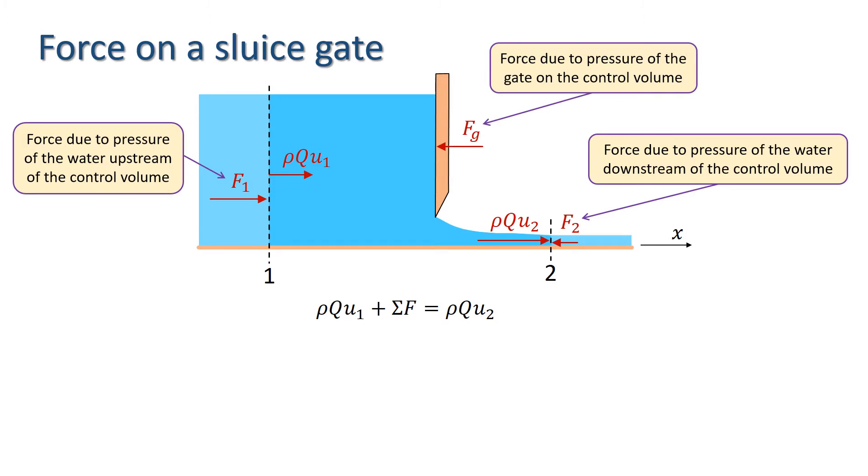We should note here the direction of Fg. This is a reaction force which is equal in magnitude and opposite in direction to the force that the water exerts on the gate. It's this reaction force we need in the momentum equation since this is the force acting on the control volume. Thus, the momentum equation in the x-direction is rho q u1 plus F1 minus Fg minus F2 equals rho q u2.